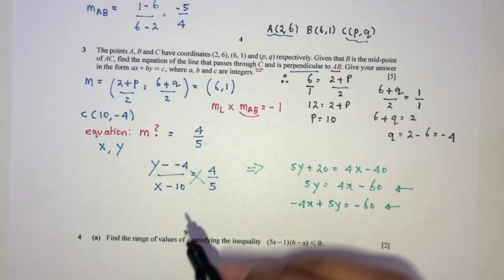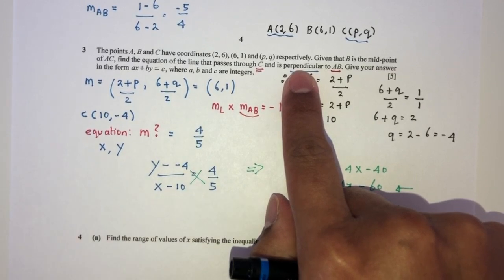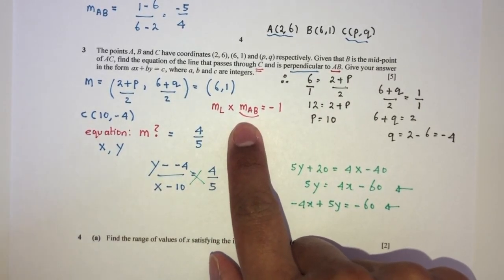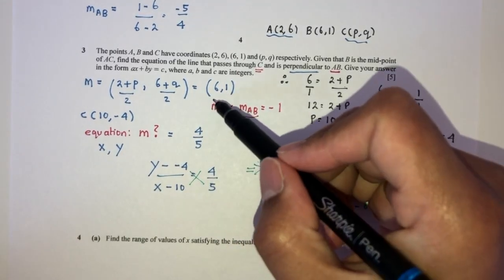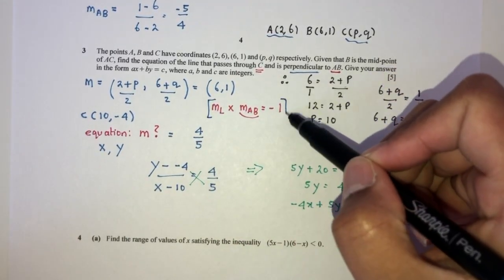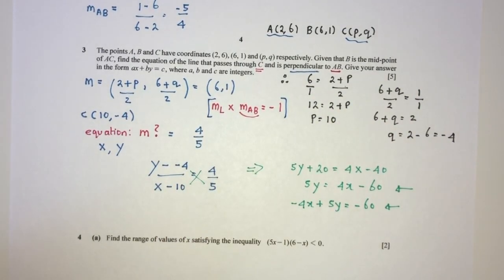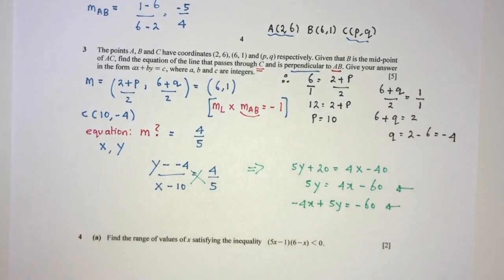The main point of question 3 was to know that when one line is perpendicular to another, multiplying their gradients gives minus 1. We also needed to find the midpoint between two points and use that to find the missing coordinates.